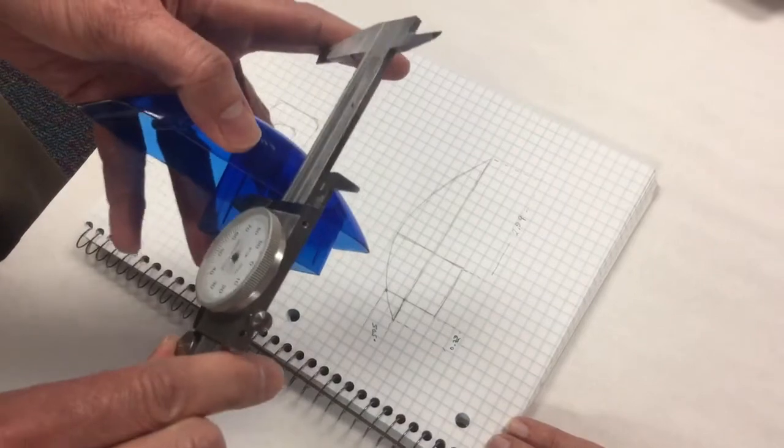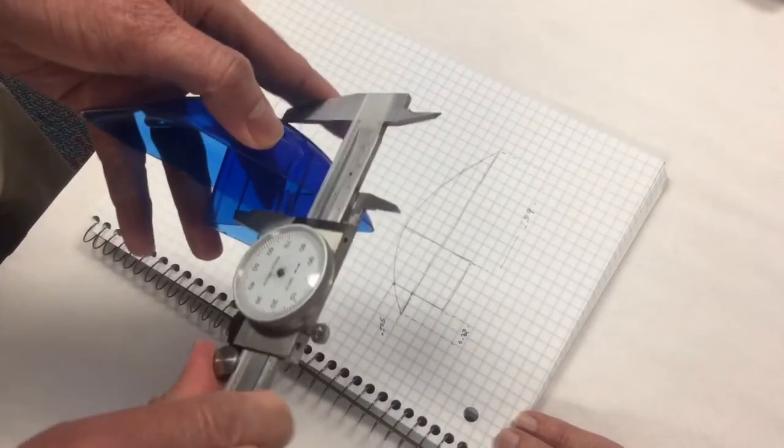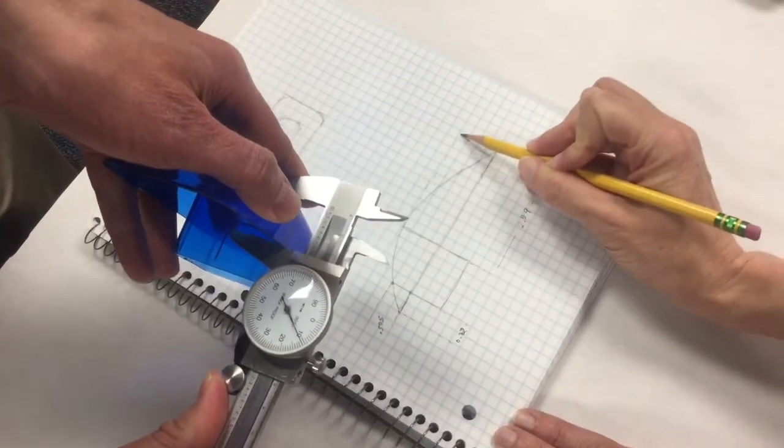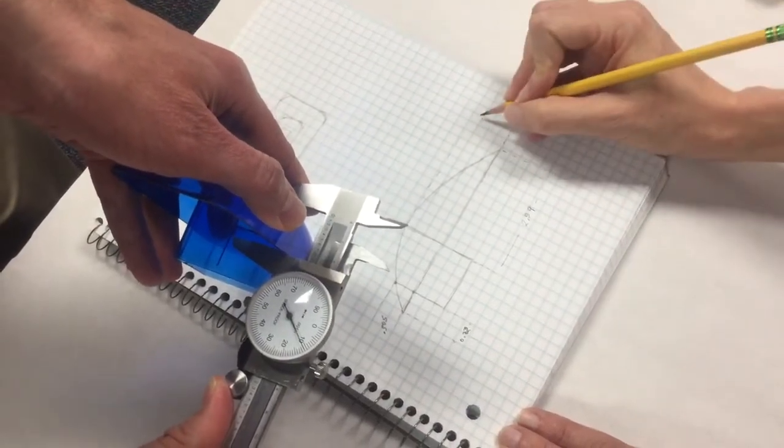And then again, place it up against that edge to get a height, and this one is 0.910.